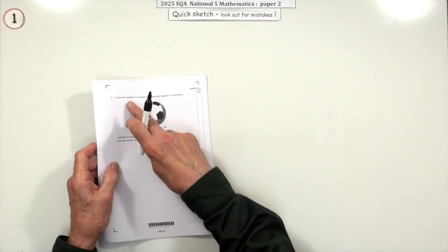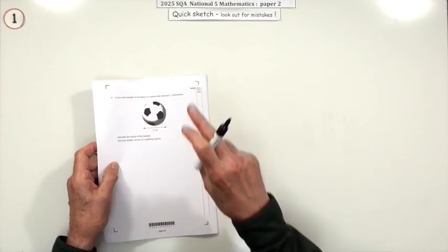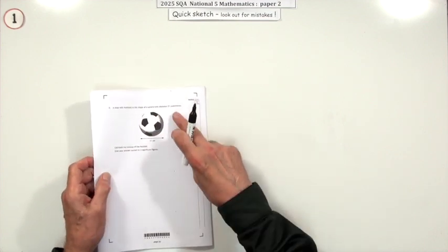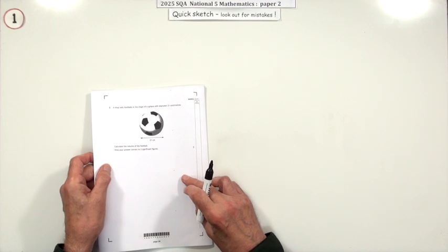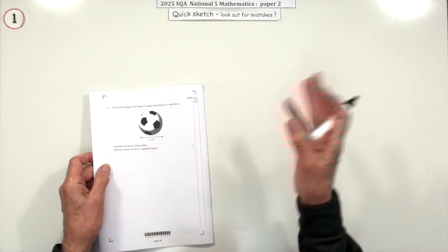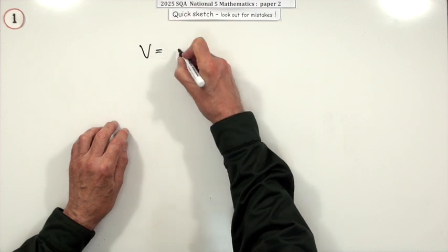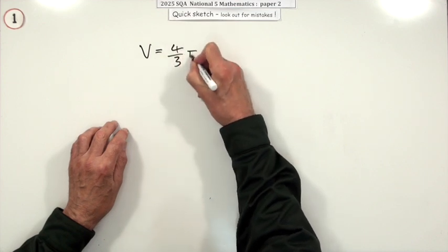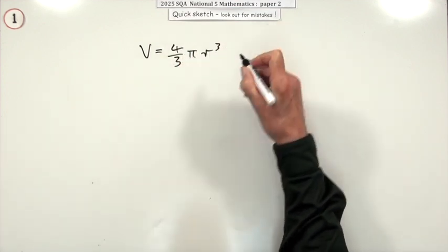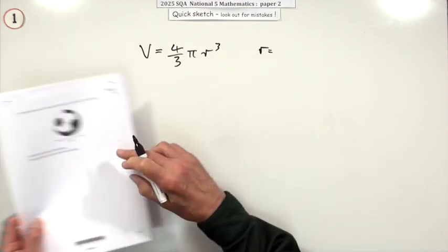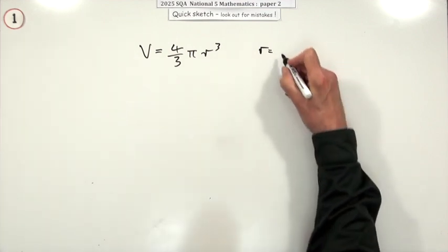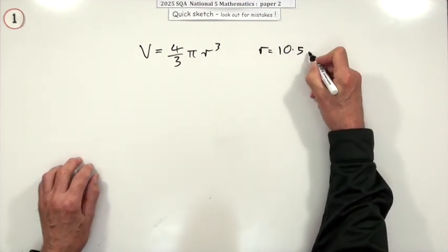Number two here. A shop sells footballs in the shape of a sphere. It's very handy. With a diameter of 21 calculate the volume. Three marks. Formula, figures, answer. Well the volume of sphere is V equals 4 upon 3 pi r cubed. But watch because the radius isn't that 21. That's the diameter. So the radius is 10.5 centimeters.